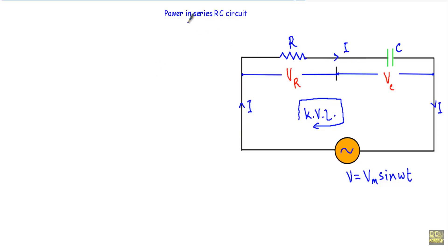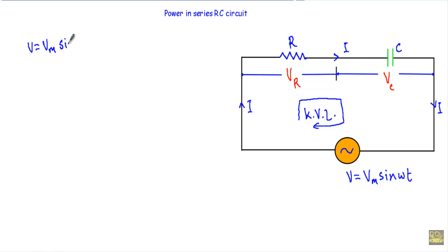In this video I will show you the power absorbed in an RC series circuit. Here we have a resistor R and a capacitor whose capacitance is C. R and C are connected in series and I am supplying this circuit with an alternating voltage source V equal to Vm sin(ωt). As this is an RC series circuit, this is a capacitive circuit.